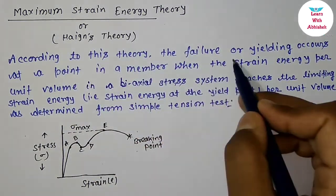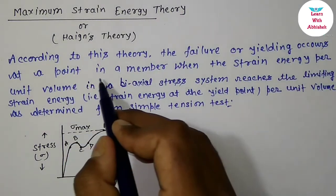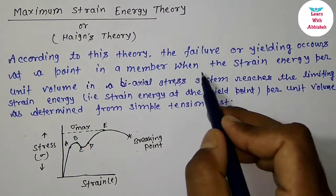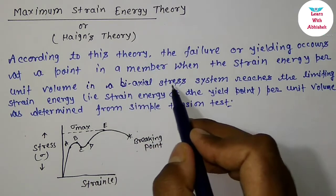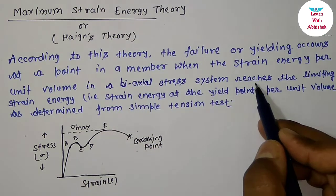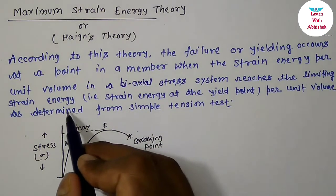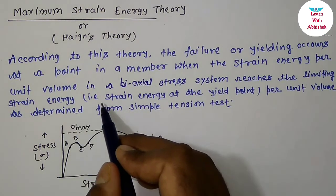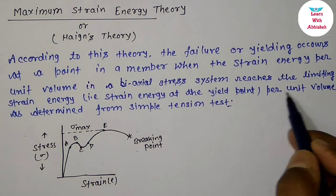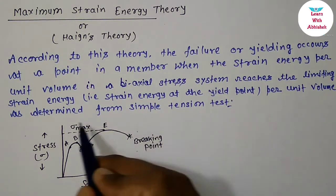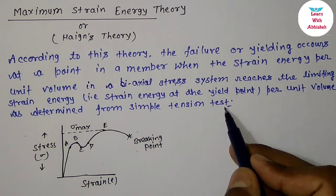According to this theory, failure or yielding occurs at a point in a member when the strain energy per unit volume in a biaxial stress system reaches the limiting strain energy, or strain energy at yield point per unit volume, as determined from the simple tension test.